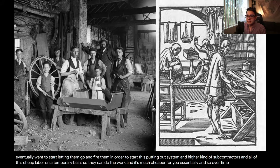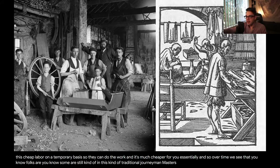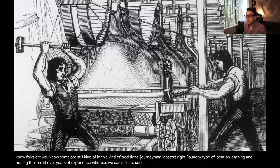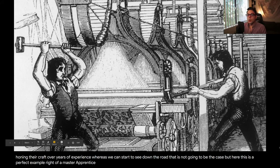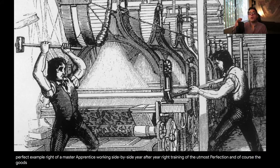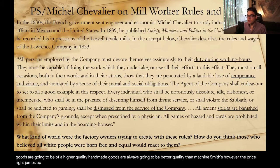Over time, some folks are still in this traditional journeyman-master foundry type of setting, learning and honing their craft over years of experience, whereas down the road that won't be the case. This is a perfect example of a master and apprentice working side by side, year after year, training to perfection. Of course, the goods are going to be of higher quality — handmade goods are always better quality than machine-made. However, the price jumps up exorbitantly as well.